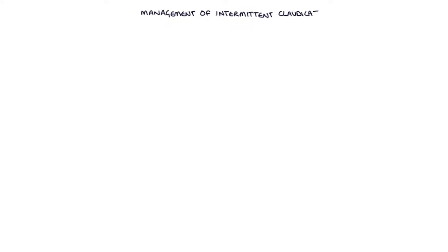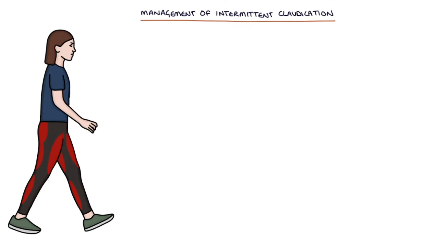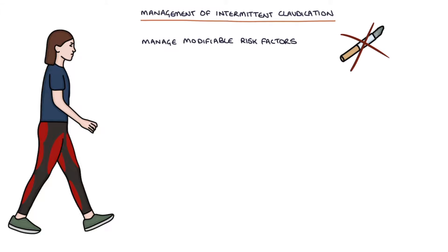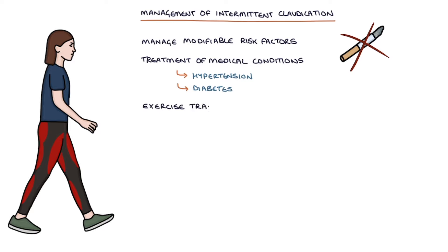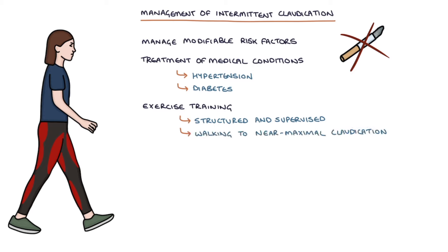Let's talk about management of intermittent claudication. Lifestyle changes are required to manage modifiable risk factors, for example stopping smoking. Patients also need optimal treatment of medical conditions such as hypertension and diabetes. Exercise training involves a structured and supervised program of regular walking to the point of near-maximal claudication pain, then resting and repeating, which helps to improve blood flow to the peripheral tissues.